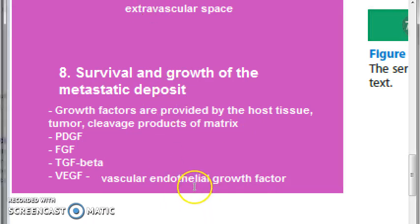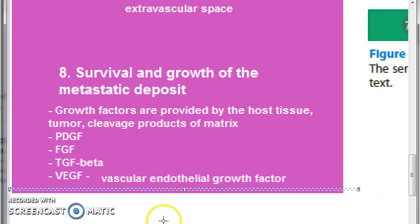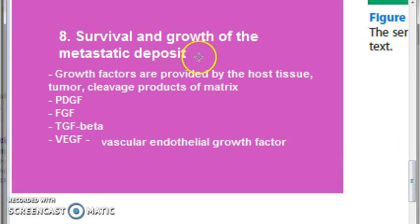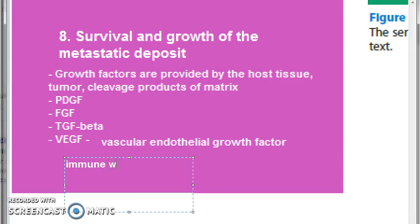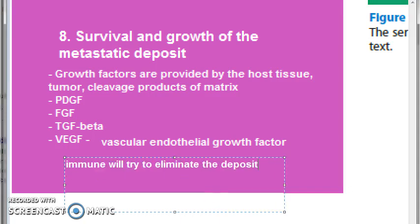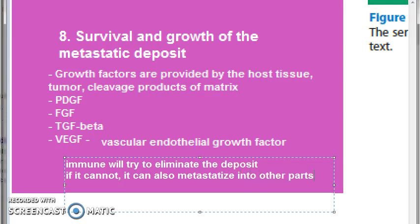One thing you should know here: the immune will try to clear it off, but if the metastatic deposit survives, it can also metastasize into other parts of the body. The immune will try to eliminate the deposit; however, if it cannot, it will survive and can also metastasize into other parts of the body.